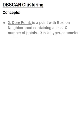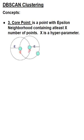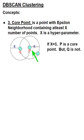Next, we're going to look at how DBSCAN classifies its points based on the density in the epsilon neighborhood. Core point refers to any point which has at least X elements or points in its epsilon neighborhood, where X is a hyperparameter. In this example, we take X as 3. Then P is a core point, but Q is not a core point.